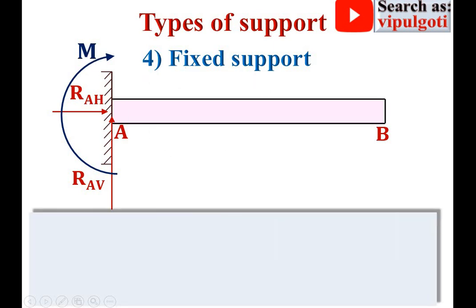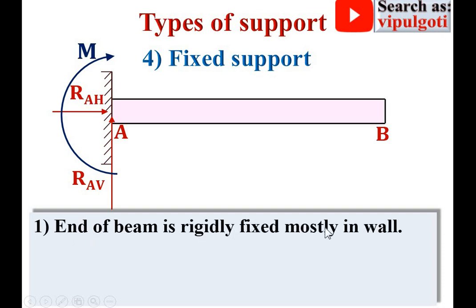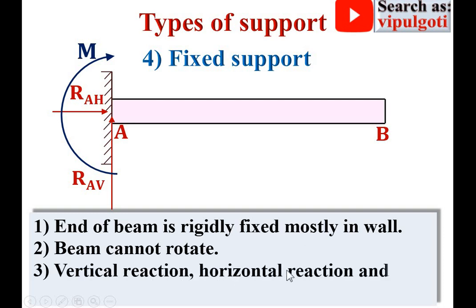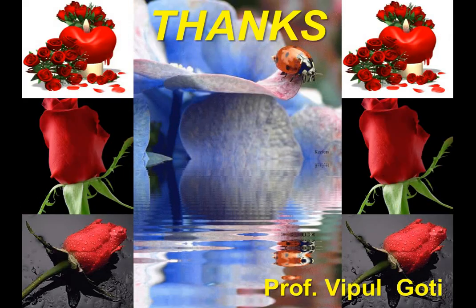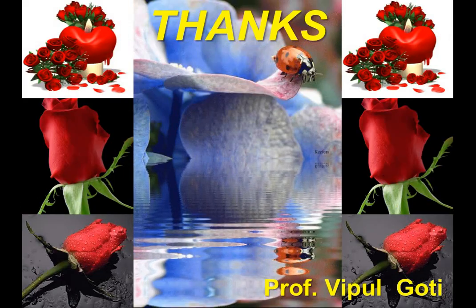Important notes for fixed support: first, the end of the beam is rigidly fixed, mostly in a wall; second, the beam cannot rotate; third, vertical reaction, horizontal reaction, and moment can all develop. Here you can see vertical reaction, horizontal reaction, and moment can develop. Thanks friends — press the like button to appreciate this video.